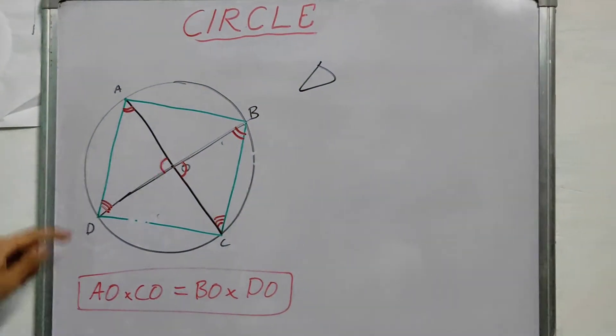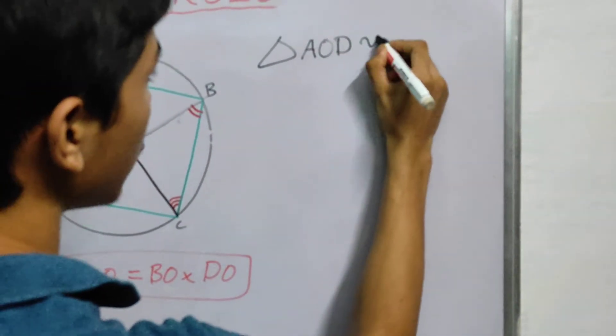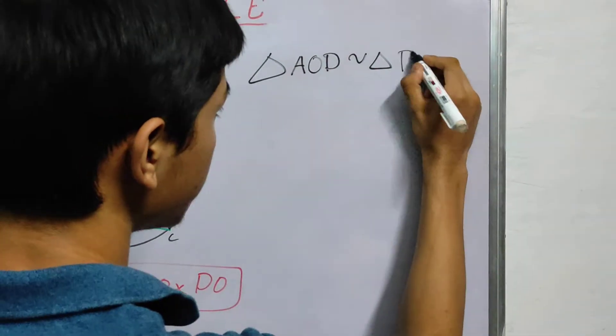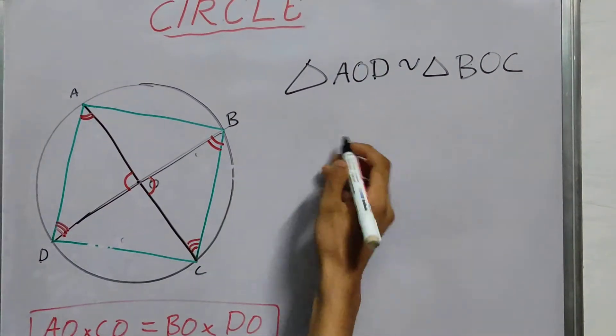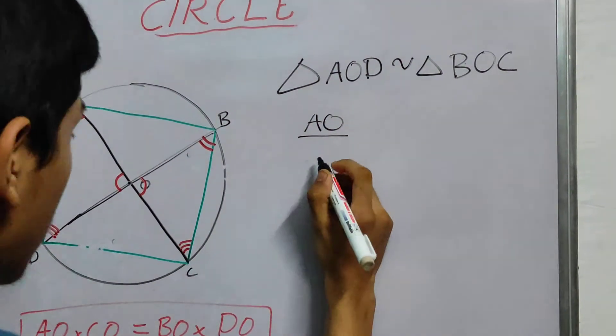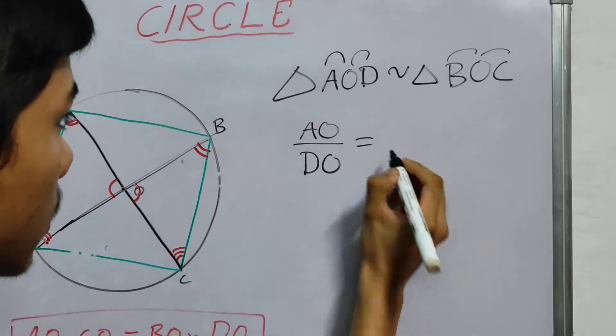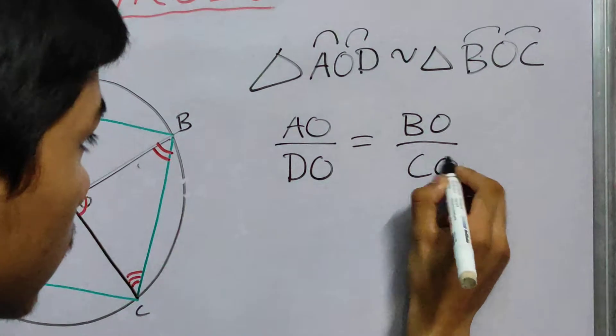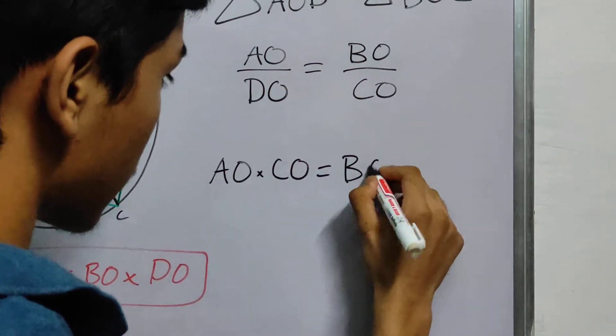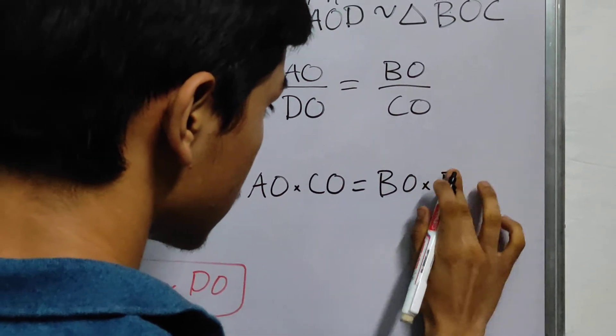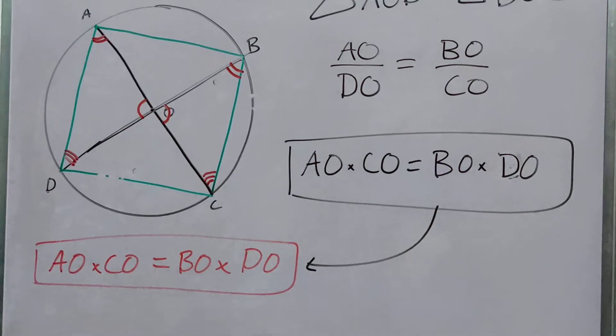So if I write triangle AOD, you can see the angles marked. Triangle AOD is similar to triangle BOC. Angle A equals angle B, angle O equals angle O, and angle D equals angle C. Now it's as good as done. AO divided by DO, ratio of these two is equal to ratio of these two, which is exactly the same result.